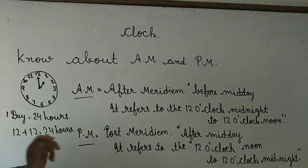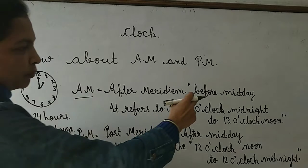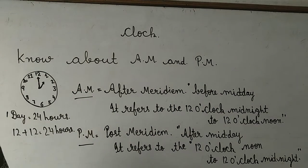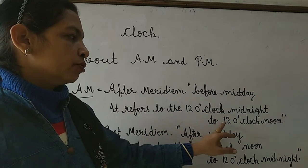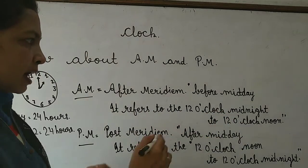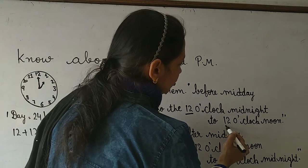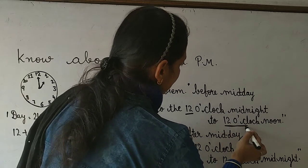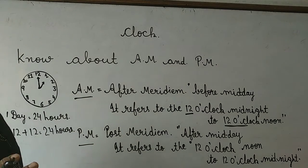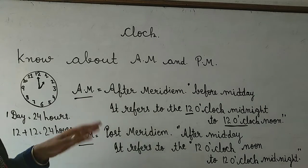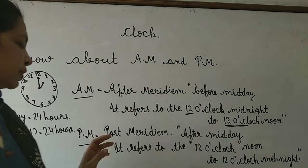Ab A.M. kya hai aur P.M. kya hai? A.M. is equal to ante meridiem — mnudlag before midday. Midday, mnudlag 12 o'clock noon. It refers to 12 o'clock midnight to 12 o'clock noon. Mnudlag raath ki 12 o'clock se leake din ke 12 o'clock noon tak jo time hota hai, wo humara A.M. hota hai. Raath ko 12 o'clock se A.M. start ho jayega aur woh 12 o'clock noon tak rhega.